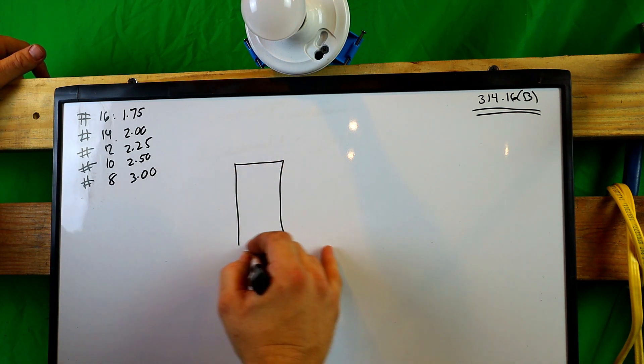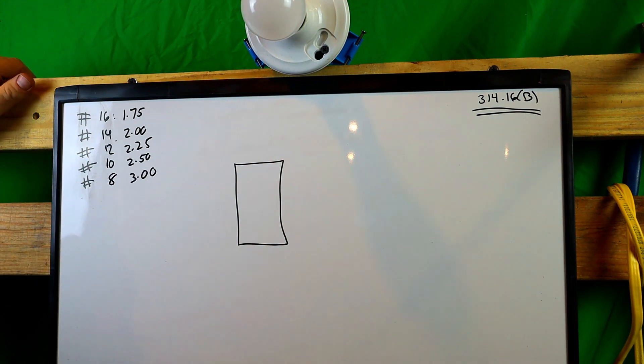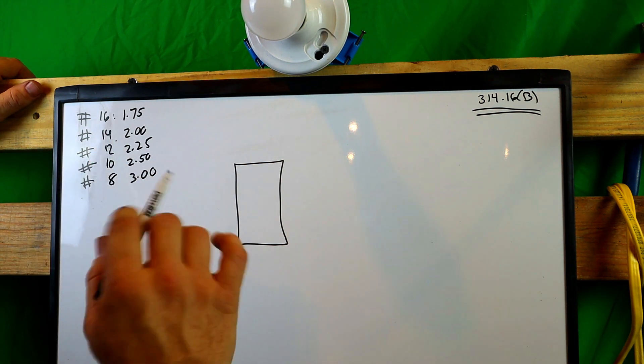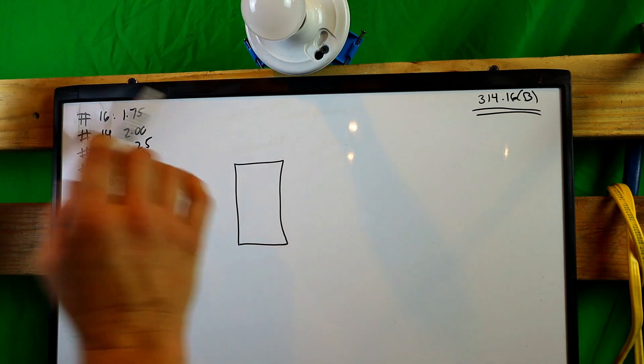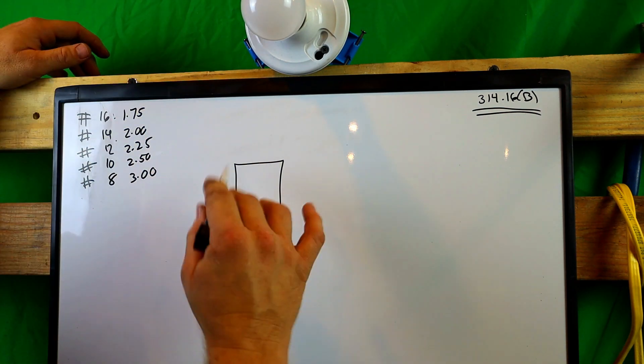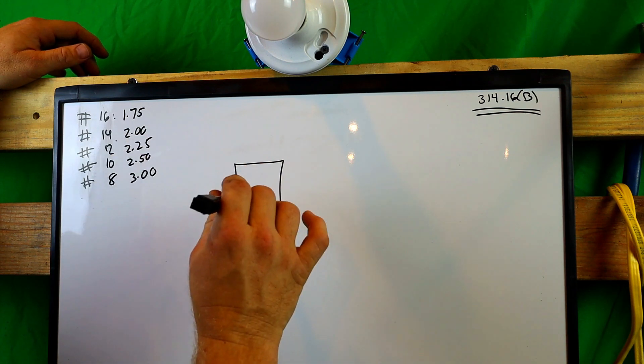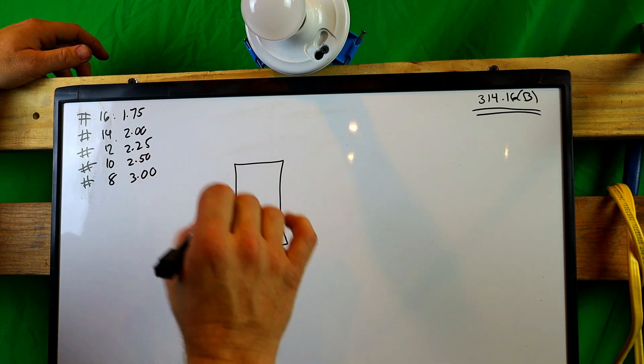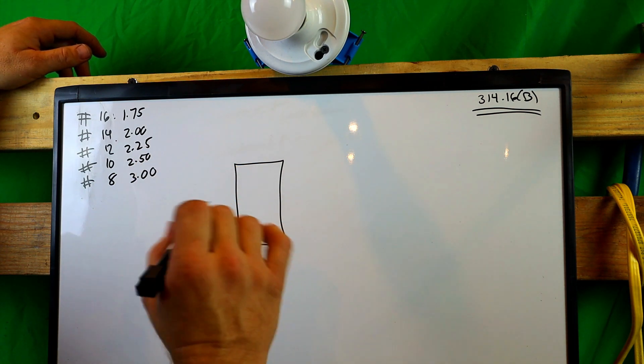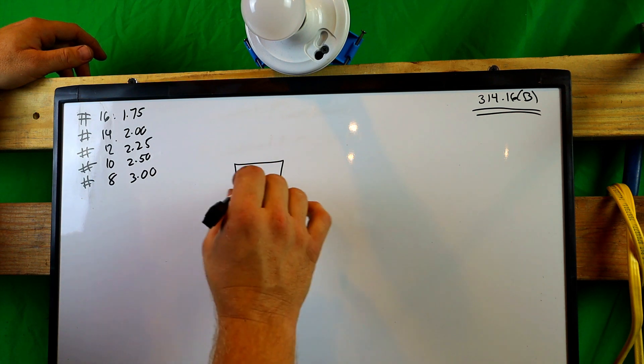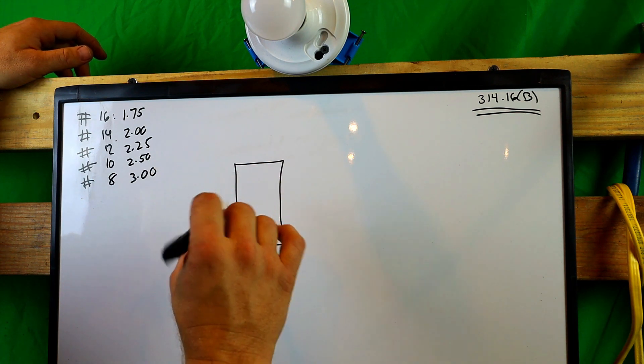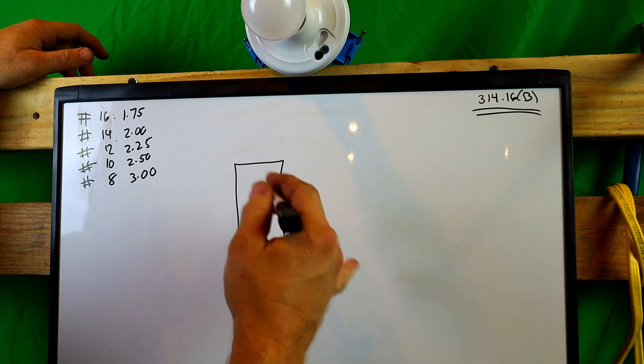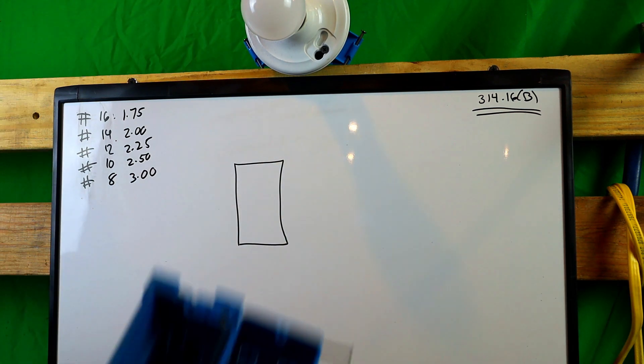Let's start out by putting a box right here. Alright. This will be your box. Let's just say that this is a single gang box. Now I'm going to show you guys here in just a second, the box that I'm referencing right here so you guys can get a visual. I'm going to show you where the cubic inches is stamped inside of the box.